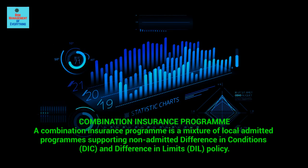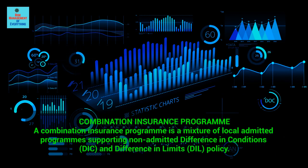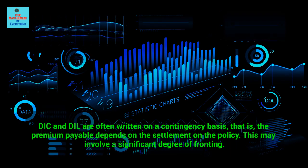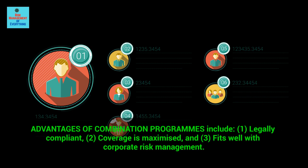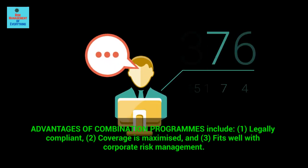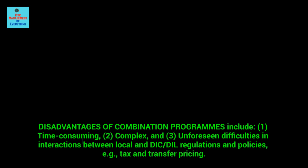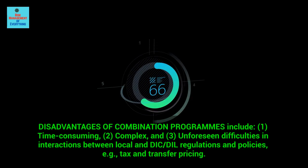How does fronting work? Many insurers refer to fronting as partnering. The multinational company's insurer is non-admitted in various countries, but the MNC wants to be compliant. The insurer issues a master policy, but local insurers agree to issue policies in non-admitted countries as part of that. In developed insurance markets, these local policies may be acceptable; in less developed markets, they may not meet the multinational companies' or the insurers' standards. A combination insurance program is a mixture of local admitted programs supported by non-admitted Difference in Conditions (DIC) and Difference in Limits (DIL) policies. DIC and DIL are often written on a contingency basis, meaning the premium payable depends on the settlement on the policy. Advantages of combination programs include: legally compliant, coverage is maximized, and fits well with corporate risk management. Disadvantages include: time consuming, complex, and unforeseen difficulties in interactions between local and DIC/DIL regulations and policies, for example tax and transfer pricing.